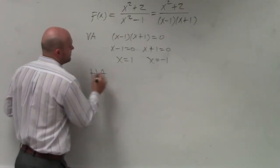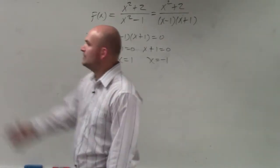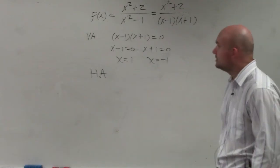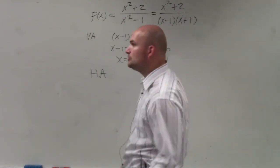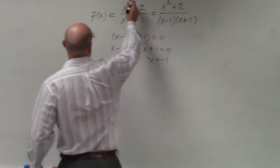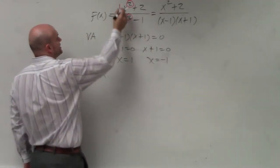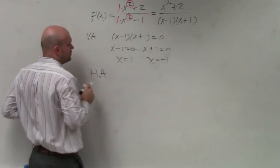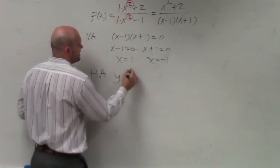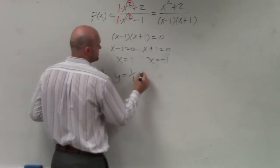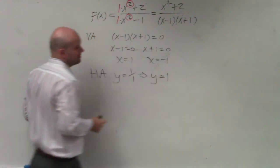Horizontal asymptote, based on my rules that I gave you, this is number three. If the degree in the numerator is equal to the degree in the denominator, then your horizontal asymptote is y equals the leading coefficient of the numerator over the leading coefficient of the denominator. So that's y equals 1 over 1, which is y equals 1 is your horizontal asymptote.